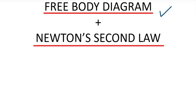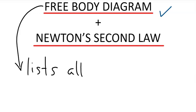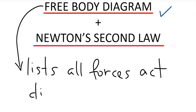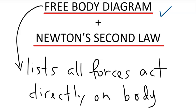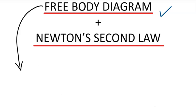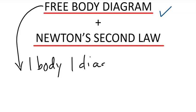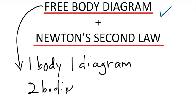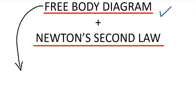So what is a free-body diagram? It is a diagram that lists all forces that act directly on a body. Those forces must act directly on the body. Another thing to note is that one body means one diagram, which means if a system has two bodies, then you have two separate free-body diagrams.